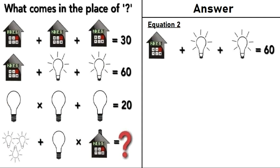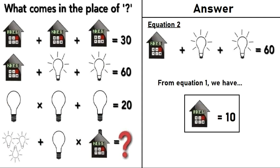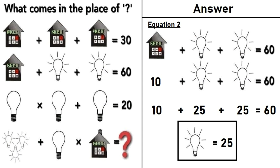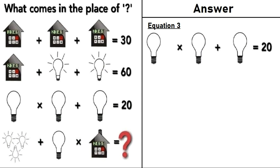Moving on to equation number 2. From equation 1, we have a house is equal to 10. Putting that in equation number 2, we have 10 plus bulb with lights plus bulb with lights is equal to 60. 10 plus 25 plus 25 is equal to 60. A bulb with lights is equal to 25.